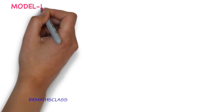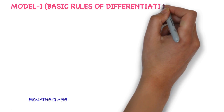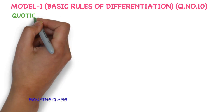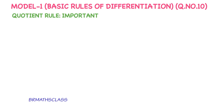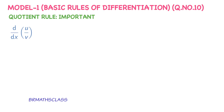Module 1: basic rules of differentiation. In this lesson we learn how to use the quotient rule. The quotient rule is a formula which is very important and we use it very frequently throughout this differentiation chapter.